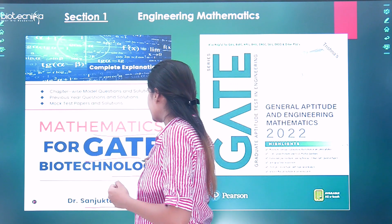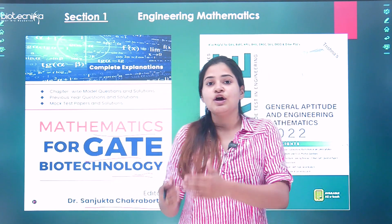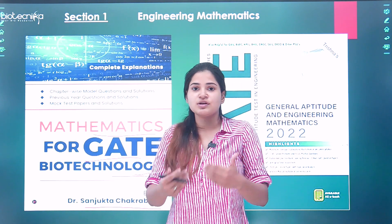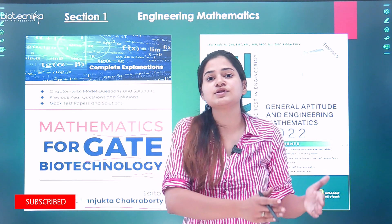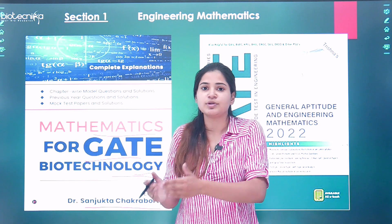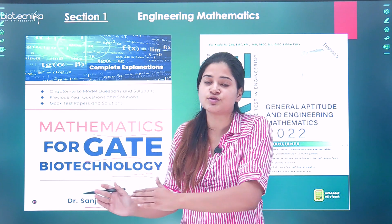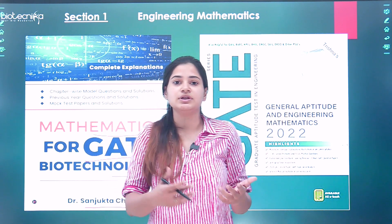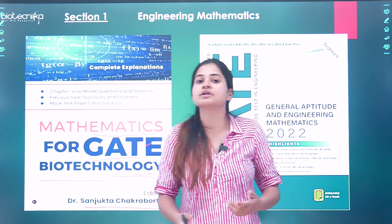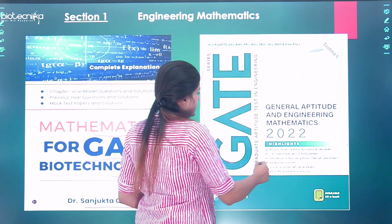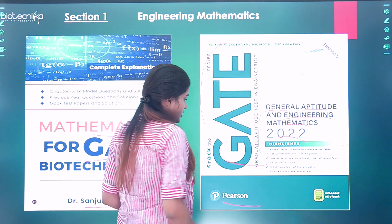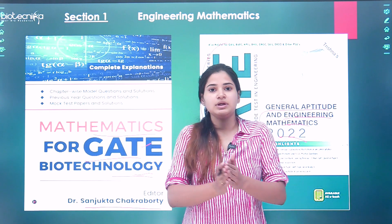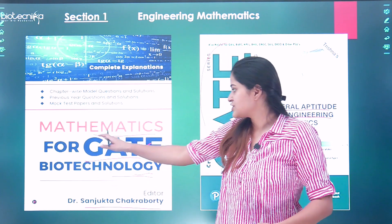In that situation, 'Mathematics for GATE Biotechnology' is recommended. Standard engineering mathematics books have a lot of concepts, but you only need certain chapters important for the GATE BT section. If you want a broader reference, you can refer to 'General Aptitude Engineering Mathematics 2022' by Pearson Publications. Ideally, if you are preparing for GATE Biotechnology and want only the topics relevant to the engineering mathematics section, you can surely refer to this book.